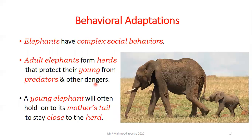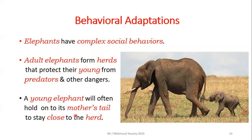Other behavioral adaptations include elephants, which have complex social behaviors. Adult elephants form herds that protect their young from predators and other dangers. Young elephants will often hold on to their mother's tail, like the one in the picture, so as not to get lost or to stay close to the herd.